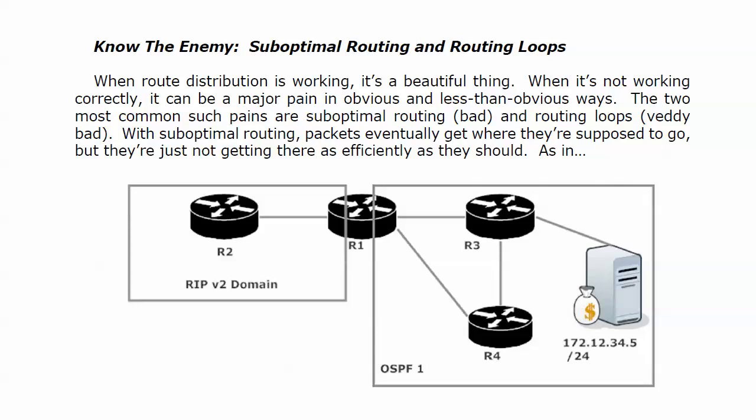Routing loops, of course, are horrendous, very, very bad, but suboptimal routing is also suboptimal. It's not as optimal as it should be, which means it's bad. With suboptimal routing, packets eventually get where they're supposed to go, but they're not getting there as efficiently as they should.